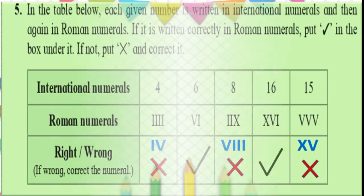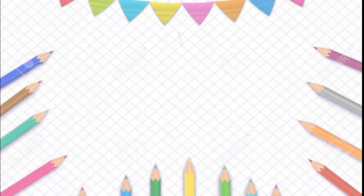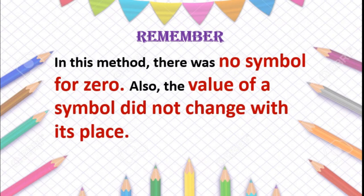Remember this: in the Roman numeral method, there was no symbol for 0. Also, the value of a symbol did not change with its place. You know that place value changes the value of a digit — we studied that in third and fourth standard. But here, the value does not change according to its place.